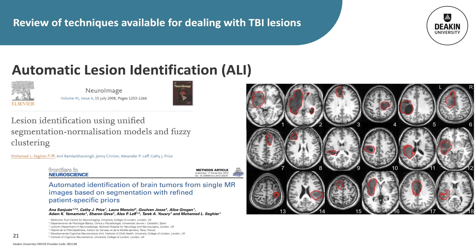Automatic Lesion Identification (ALI) is a method for automatically segmenting lesions, reducing the time-consuming practice of manual lesion delineation. ALI uses a modified unified segmentation method allowing for classification of an extra tissue class assigned to abnormal or lesioned areas. Originally developed by Seghier and colleagues in 2008 and revised in 2013 in a recursive format, the latest ALI uses tissue maps of a first estimate of the extra tissue class as patient-specific priors to re-run and improve segmentation. A major advantage of ALI is that it can be used on patients with both unilateral and bilateral lesions.